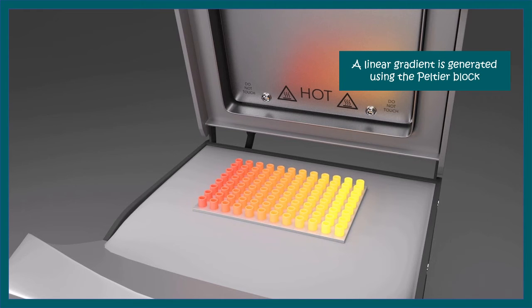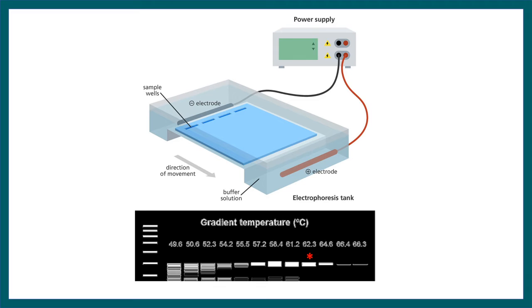So a linear gradient is established with the help of a Peltier block, which is inside the PCR machine. And once you are done with the PCR and run your product in the agarose gel, you get the amplification as a function of temperature.